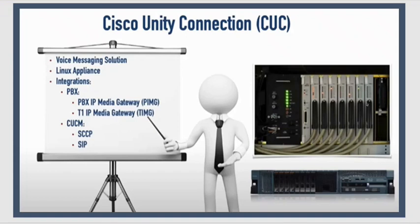Next, we have Cisco Unity Connection. Cisco Unity Connection is a voice messaging solution. We can say voicemail solution, but it is not just a voicemail solution. Like in CUCM, it was called call control, but it doesn't just do call control anymore — it has much more features and functions, so now it's called Communications Manager. Similarly, Cisco Unity Connection was made a voicemail server earlier, but later on, a lot of services have been implemented. It's not just used for voicemail — it is called a voice messaging system now.